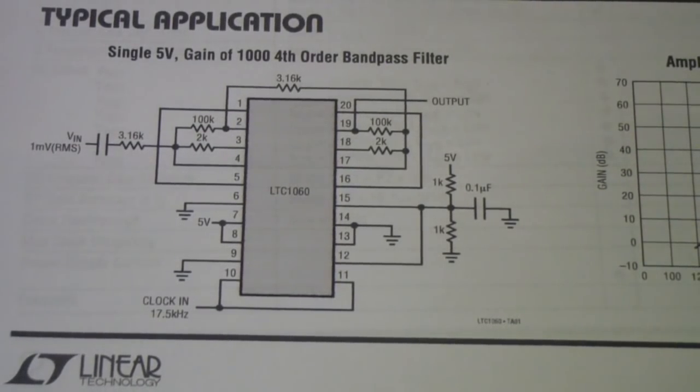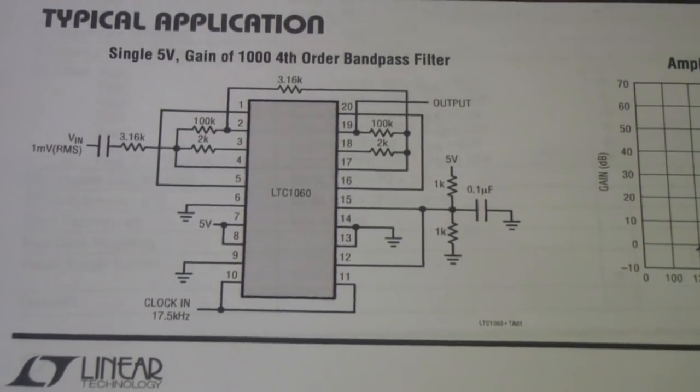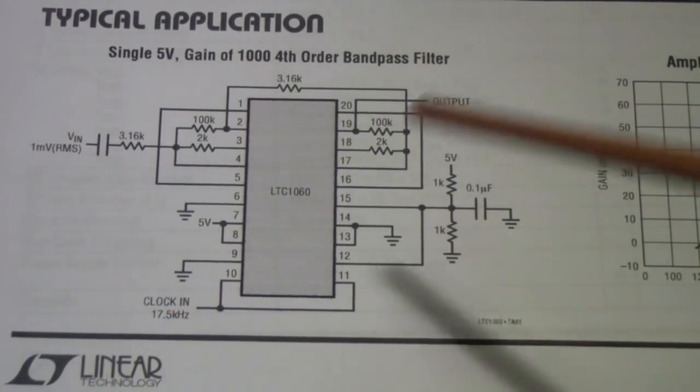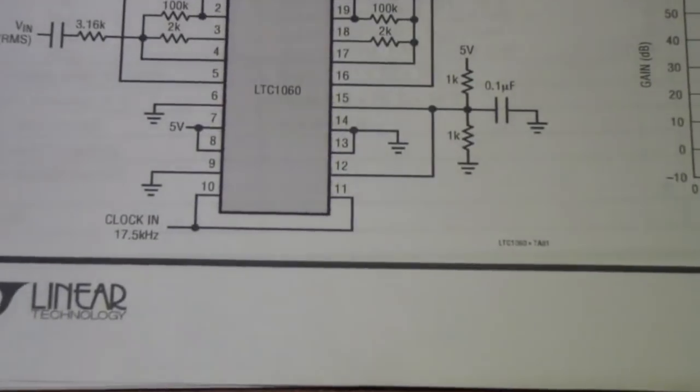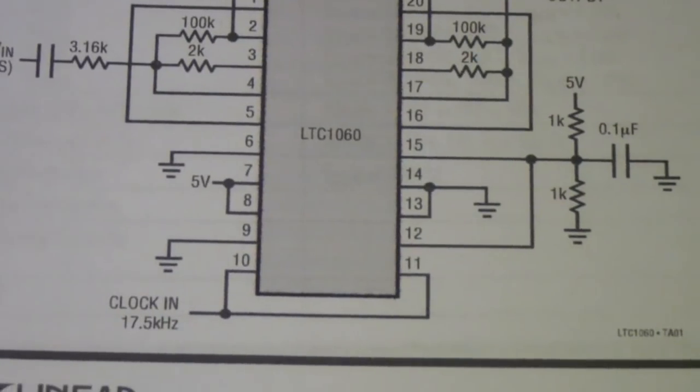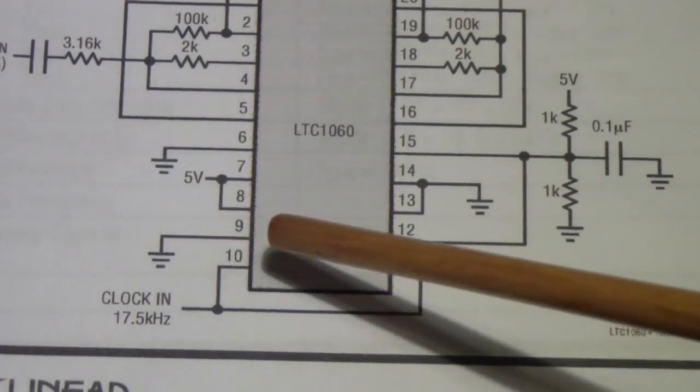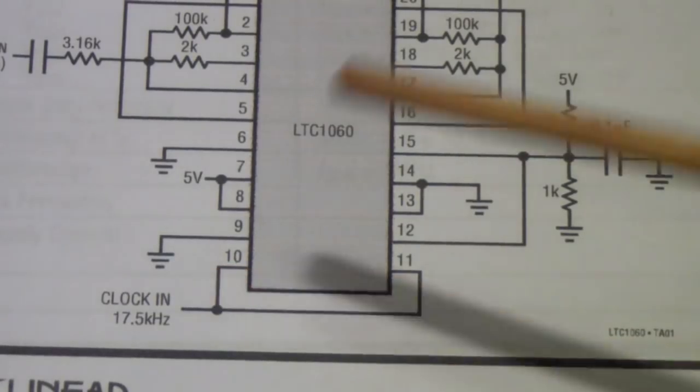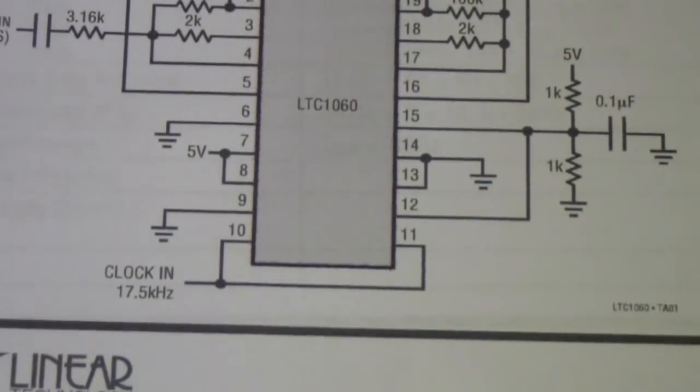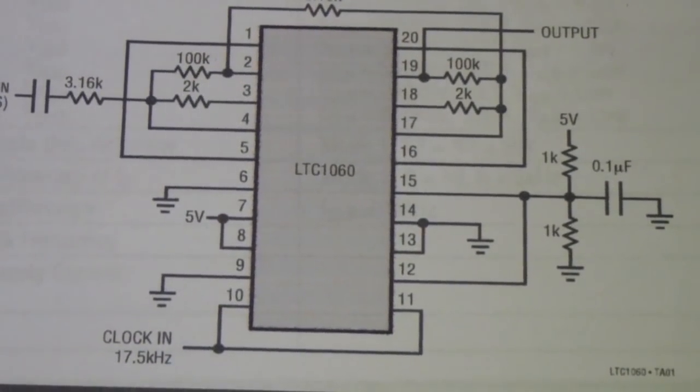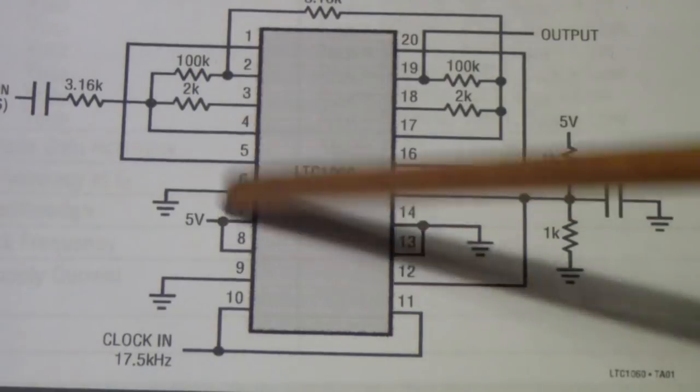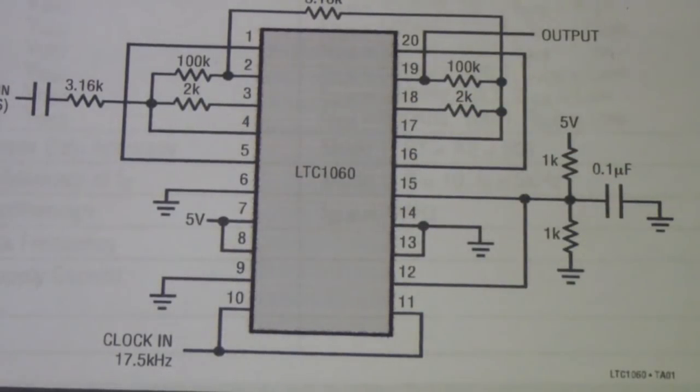We'll look at the block diagram in just a second, but I just wanted to talk about the basics of this kind of a filter. You may notice down here it has a clock. The clock in is at 17.5 kilohertz and this is operating off a single supply. In other words I have 5 volts connected to VCC and then ground, no negative 5 volts.